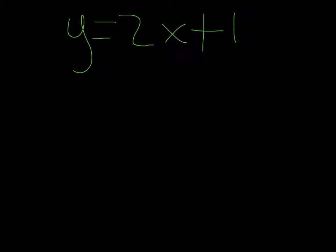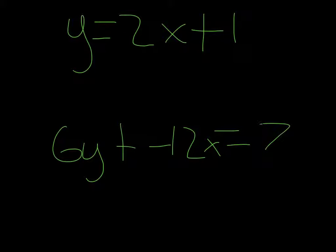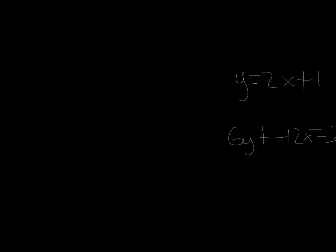And so the other equation we had was 6y plus negative 12x equals 7. And when we turn it to y equals mx plus b form, we get y equals 2x plus 1 and 1 sixth.